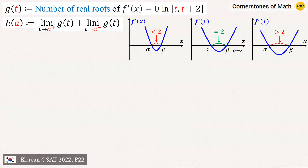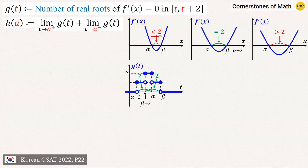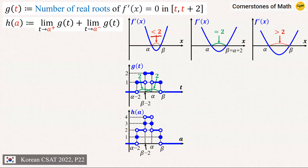Let us examine these three cases. First, when the distance between α and β is less than 2, we now have an interval where g(t) can have the value of 2, meaning the interval of length 2 can contain both roots α and β. And for h(a), you can see that h(a) can have values not only of 1 and 2, but also 3 and 4. For example, when a is at a certain point, both limits have the value of 2, hence h(a) becomes 4.